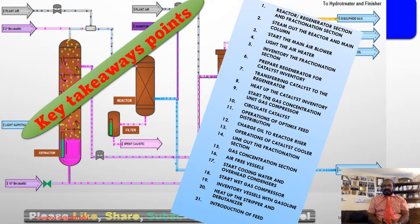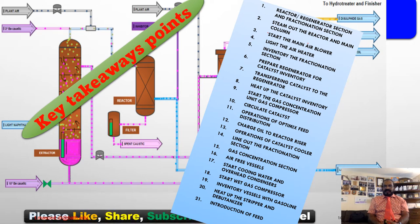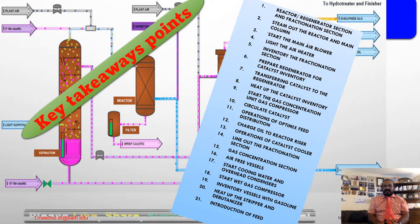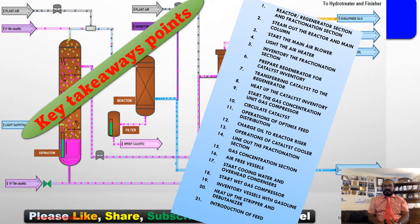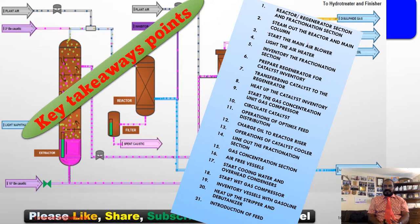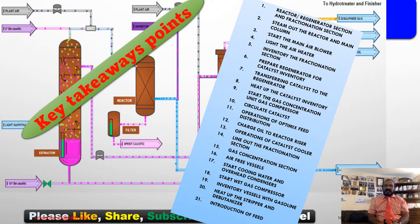The first topic is Reactor Regenerator Sections and Fractionation. Number 2, Steam Out the Reactor and Main Column. Number 3, Start the Main Air Blower. Number 3, Light the Air Heater. Number 4, Inventory the Fractionation Section. Prepare the Regenerator for Catalyst Inventory. Number 6, Transferring Catalyst to the Regenerator and Heat up the Catalyst Inventory. Start the Gas Compressor. Number 9, Circulate Catalyst. Number 10, Operation of Optimex Feed Distributors. Charge Oil to the Reactor Riser.